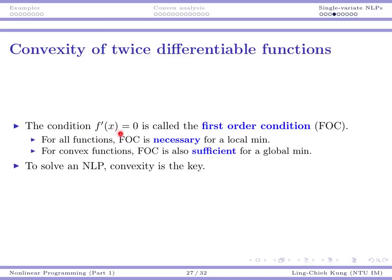The condition that the first-order derivative equals zero is the central heart of the entire solution process. This is called the first-order condition. Every time we want to find an optimal solution, we compute the first-order derivative and look at points where it equals zero. Those points are necessary for a local minimum, and hence also necessary for a global minimum. If the function is convex, the first-order condition is also sufficient — convexity is the main weapon we're going to use.